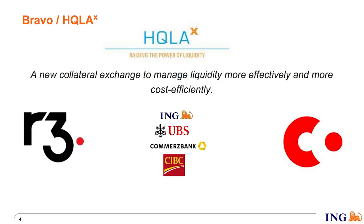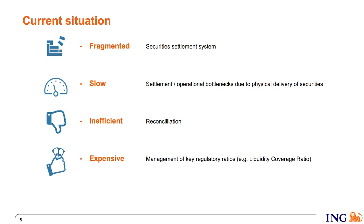HQLAX started out as Project Bravo, an R3 project run by four banks — ING, UBS, Commerzbank, and CIBC — running on Corda. In the current situation, managing liquidity and swapping assets faces a fragmented marketplace. It's slow to move securities from one bank to another, inefficient because of reconciliation, and therefore quite expensive to meet your LCR.